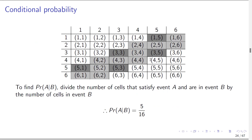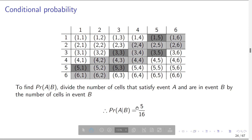There were sixteen possible outcomes in the new sample space. So five out of these sixteen possible outcomes gives us the probability of A given that B has occurred, which is 5/16.